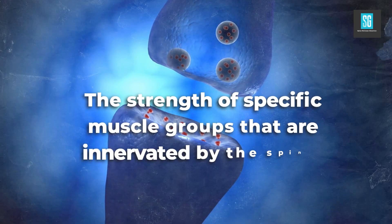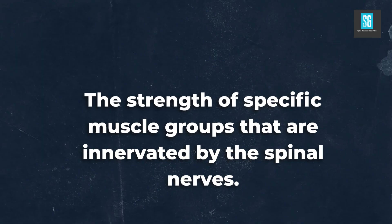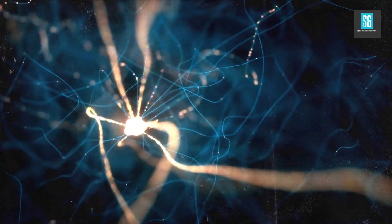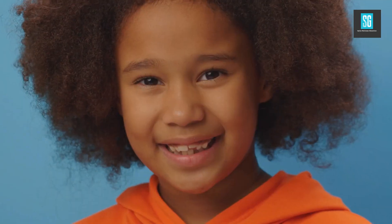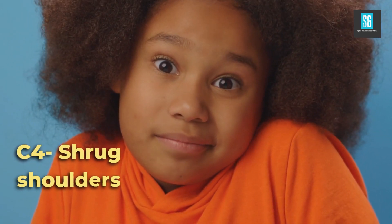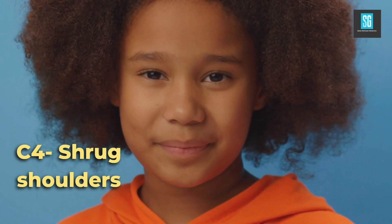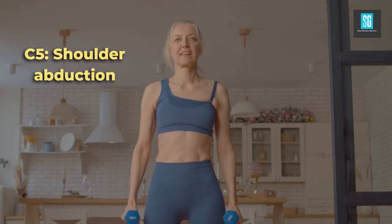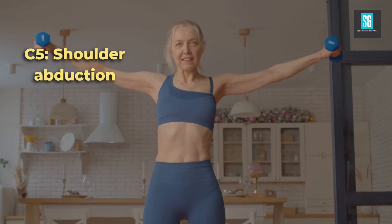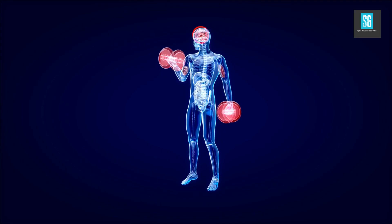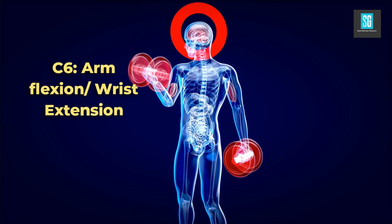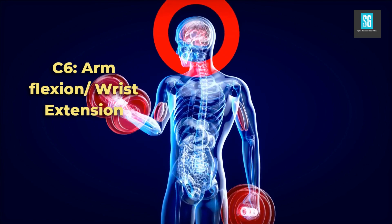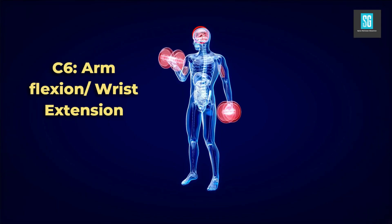Testing cervical and lumbar myotomes involves assessing the strength of specific muscle groups that are innervated by the spinal nerves. The C4 nerve is responsible for shoulder shrugging — test this by asking the patient to shrug their shoulder. C5 is responsible for shoulder abduction — test this by asking the patient to lift their arm up. The C6 nerve is responsible for arm flexion and wrist extension — test this by asking the patient to flex their arm like they are performing a bicep curl.